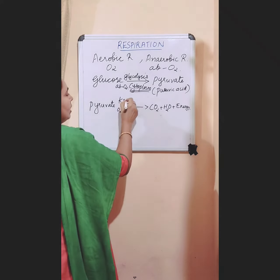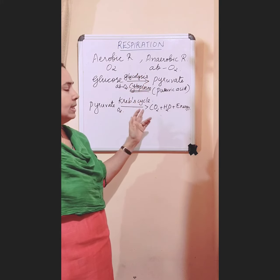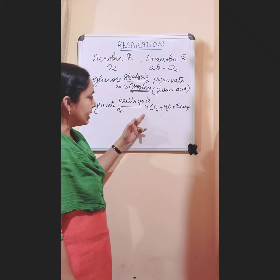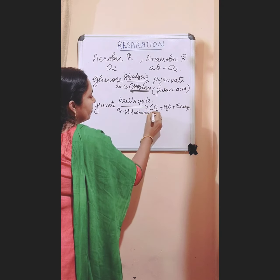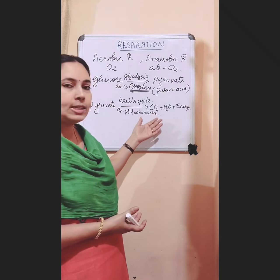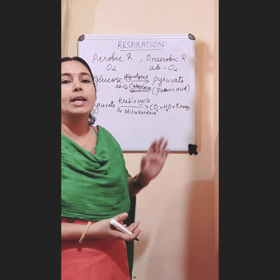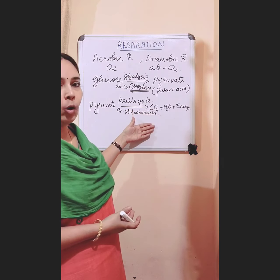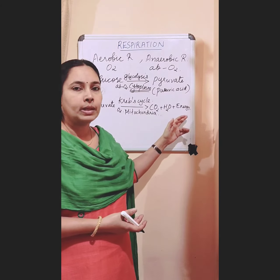This second step is called the Krebs cycle. So the first step is called glycolysis and the second step is called the Krebs cycle. The first step takes place in the cytoplasm of the cell, but the second step takes place in the mitochondria of the cell. This is why mitochondria is known as the powerhouse of the cell — because energy is released and produced in the mitochondria. In aerobic respiration, glucose is completely broken down into carbon dioxide, water, and energy.